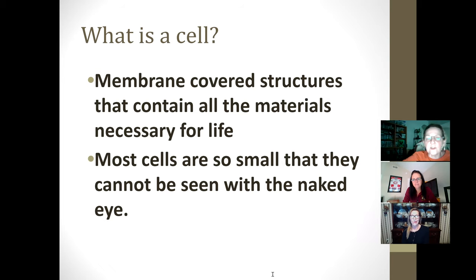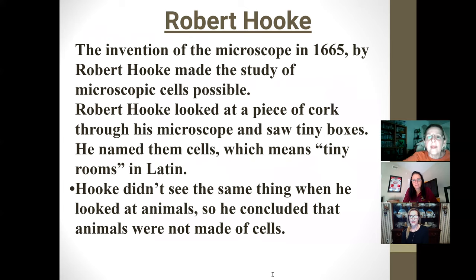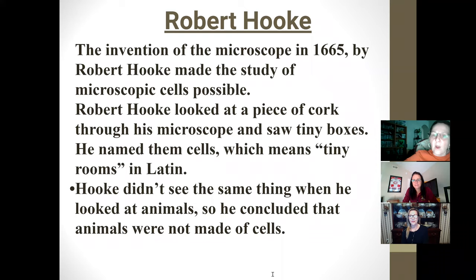Most cells are so tiny that you can't see them with your regular eye. The first scientist we're going to learn about is Robert Hooke. He created the first microscope in 1665. When he tested it out, he picked up a piece of cork — the first thing ever looked at under a microscope. When he looked at the cork, he saw little tiny boxes and called them cells, because in Latin it means tiny rooms.